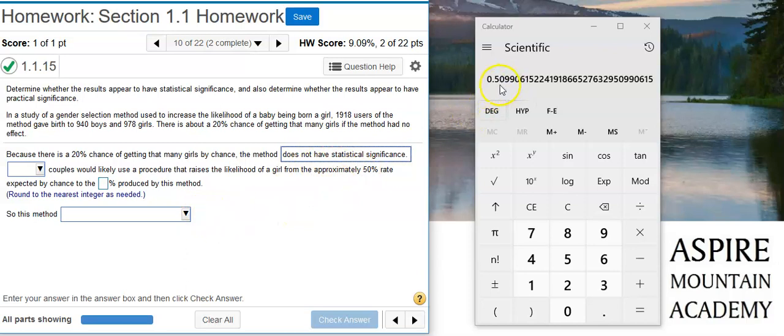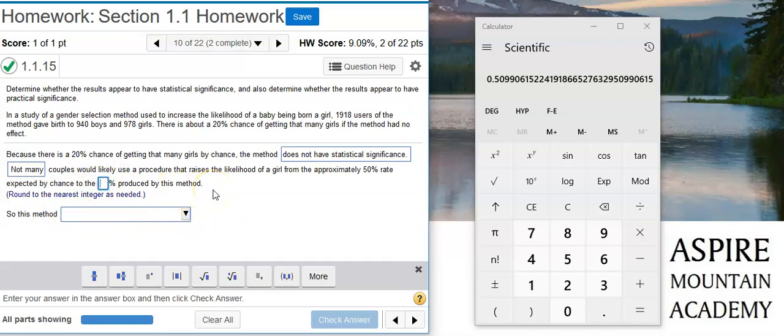And for an extra 1% bump, you're employing this method. I would say that not many people would be using this procedure because it doesn't really give you that much of a bump over the 50%. I mean, we're asked to round to the nearest integer, so that would give us 51%.